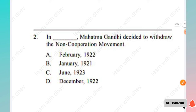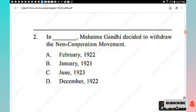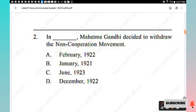Question 2: Mahatma Gandhi decided to withdraw the Non-Cooperation Movement in — options are February 1922, January 1921, June 1923, December 1922. The right answer is Option A, February 1922.